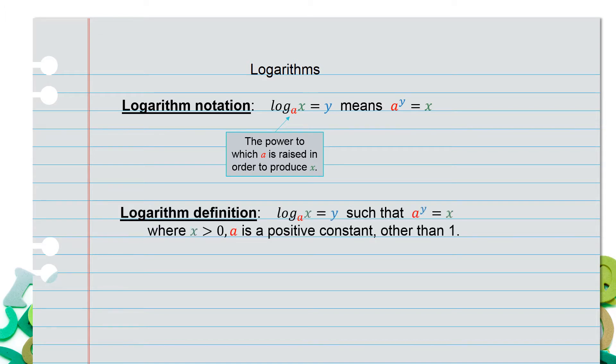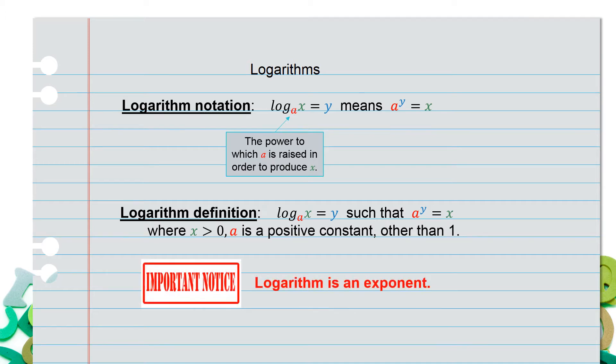The logarithm definition is log base a of x equals y, such that a raised to the power of y equals x, where x has to be greater than zero, and a, the base, is a positive constant other than one. The key thing is: a logarithm is an exponent.